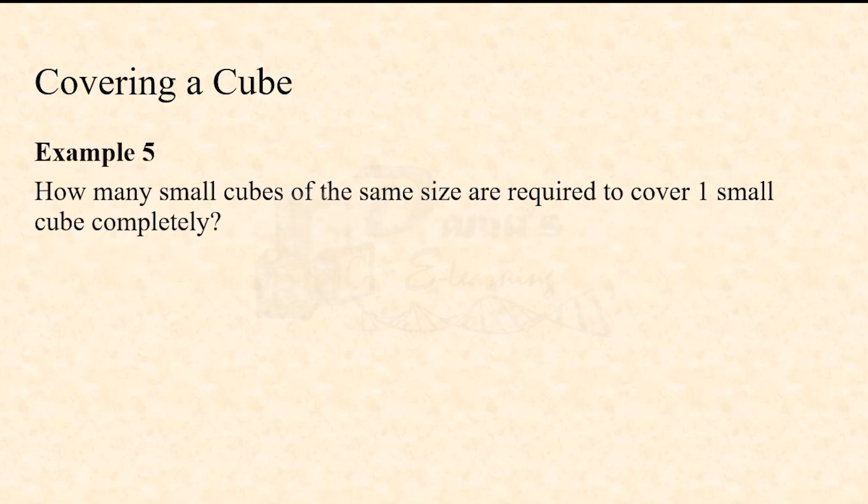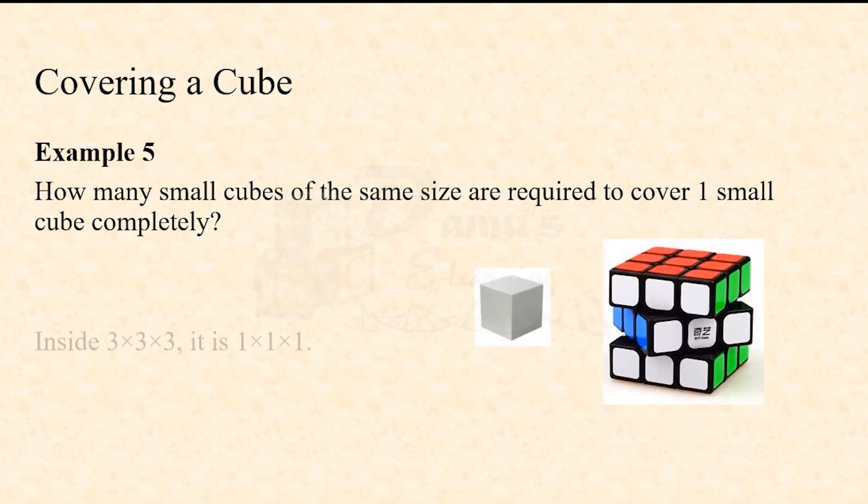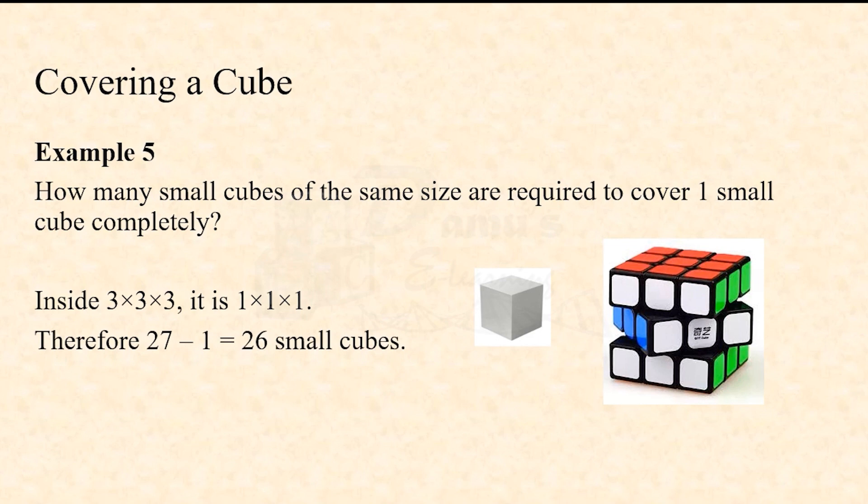Next is covering of a cube. How many small cubes of same size are required to cover one small cube completely? Inside a 3×3×3 cube you can find a 1×1×1 cube. A 3×3×3 cube means 27 small cubes, so in order to cover a single cube completely, you will need 27-1, that is 26 small cubes.